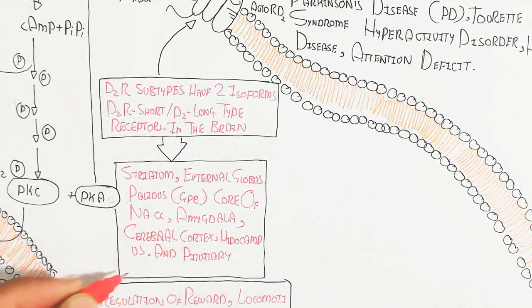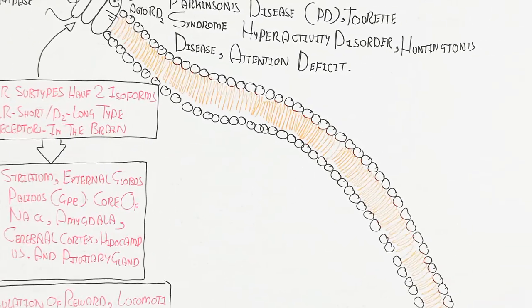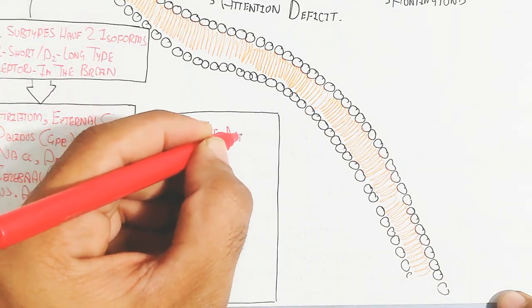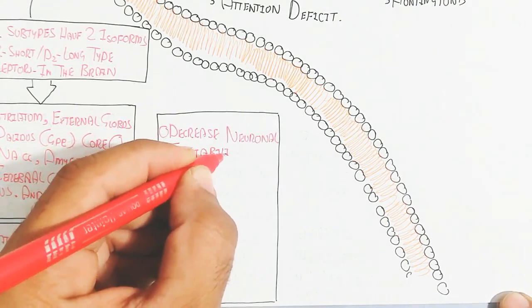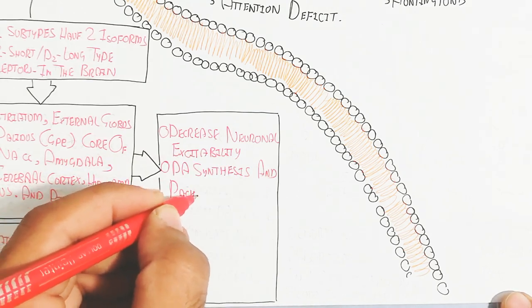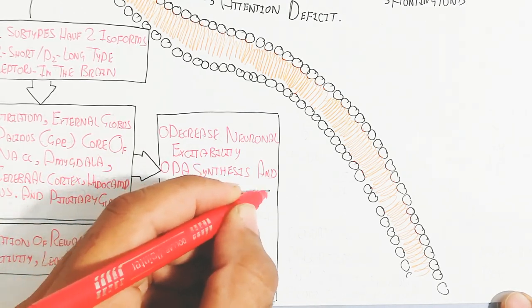Remember, the autoreceptor D2 is used for long-term memory. How is it possible? It decreases neuronal excitability, dopamine synthesis and packaging decrease, and inhibits dopamine release.